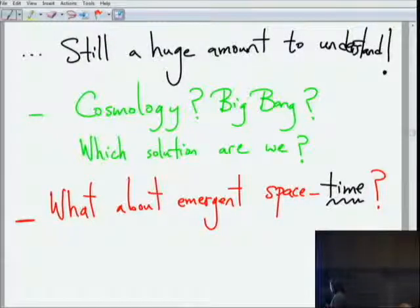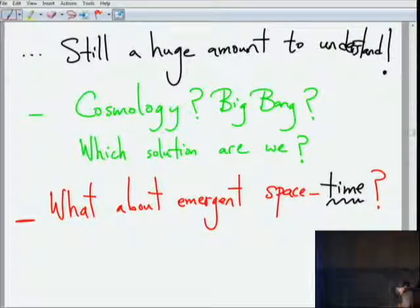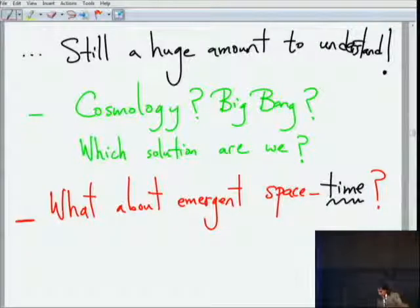Putting together quantum mechanics and gravity should tell us how to replace the notion of space-time. While this picture very beautifully told us how to generalize or generate space, it did not tell us where to get time from. So understanding where time comes from is another very important open challenge.